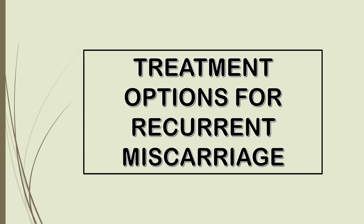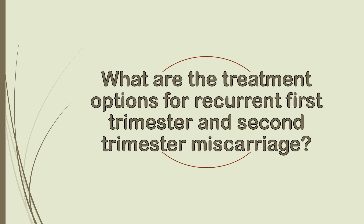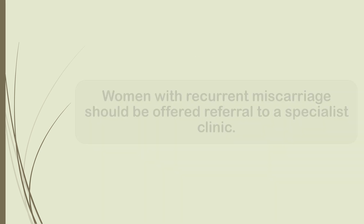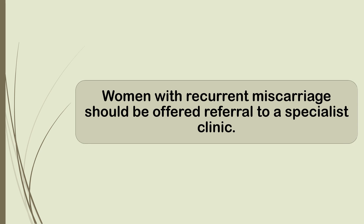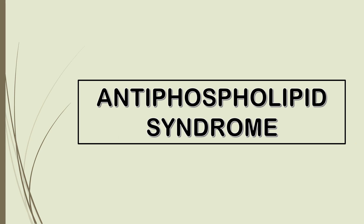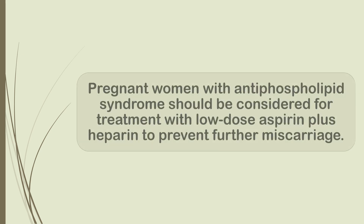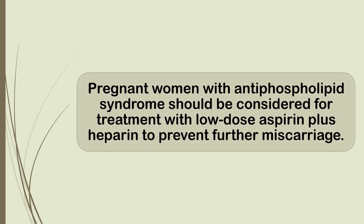Treatment options for recurrent miscarriage. What are the treatment options for recurrent first trimester and second trimester miscarriage? Women with recurrent miscarriage should be offered referral to a specialist clinic. Anti-phospholipid syndrome: pregnant women with anti-phospholipid syndrome should be considered for treatment with low-dose aspirin plus heparin to prevent further miscarriage.